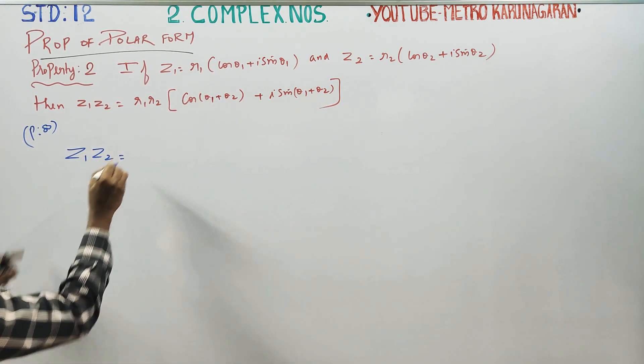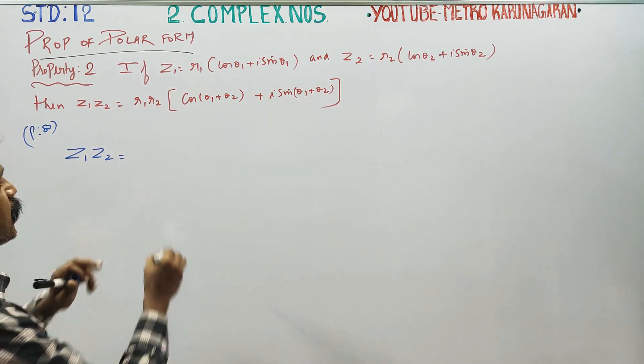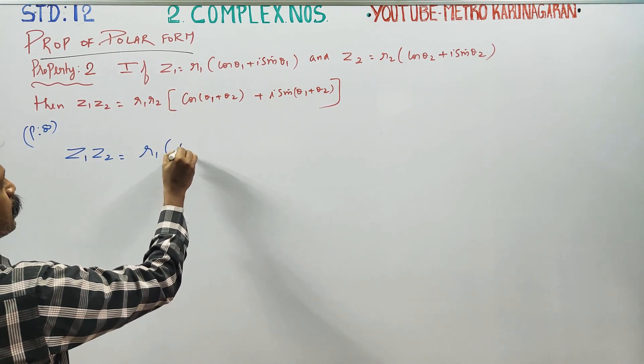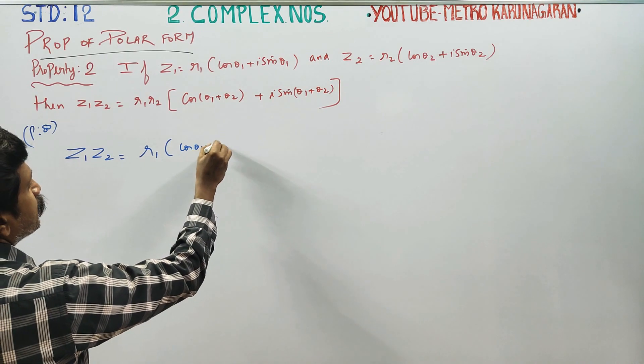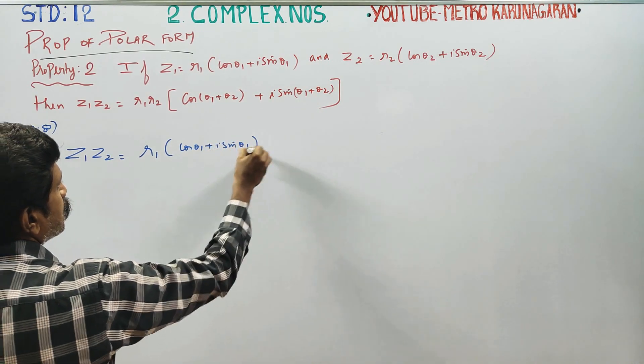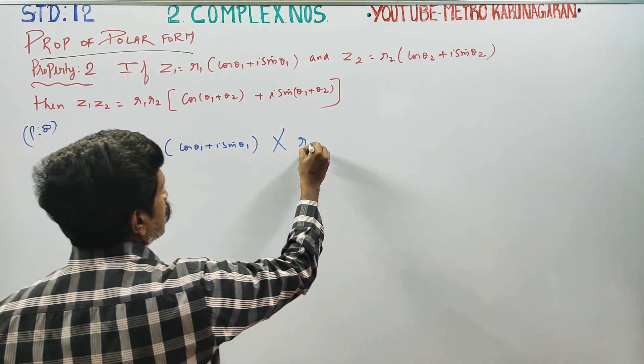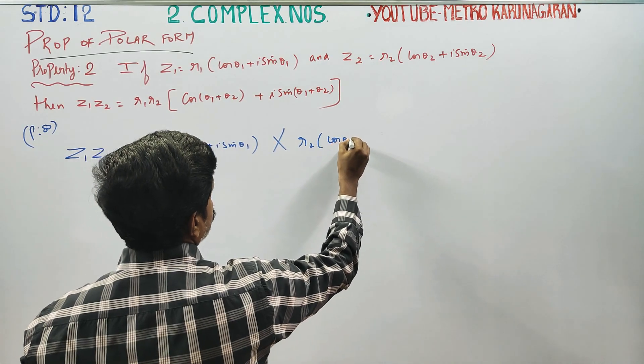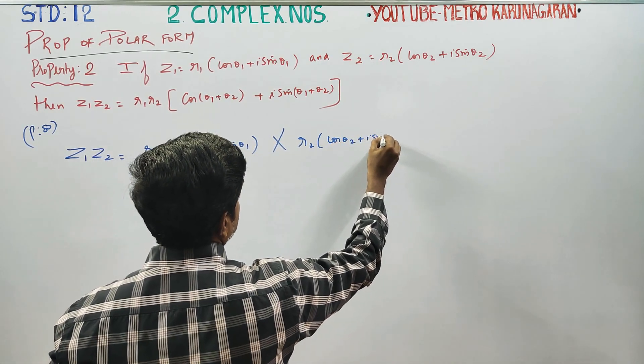Multiplication of two complex numbers. When we multiply two complex numbers in polar form: R1(cos θ1 + i sin θ1) into R2(cos θ2 + i sin θ2).